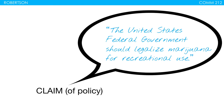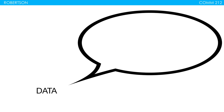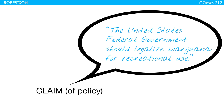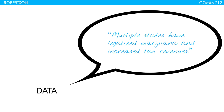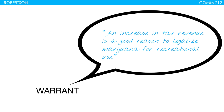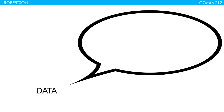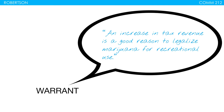Example number three is a claim of policy: 'The United States federal government should legalize marijuana for recreational use' — a claim of policy because it advocates for change to the status quo. The data: multiple states have legalized marijuana and increased tax revenues. Is this enough for you to support that claim? If you agree that an increase in tax revenue is a good reason to legalize marijuana for recreational use, then the data supports the claim. If you need more data, that works into your warrant — your understanding of how the data is appropriate to support the claim.